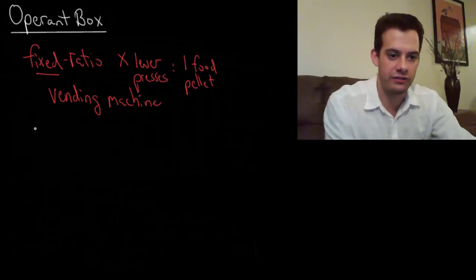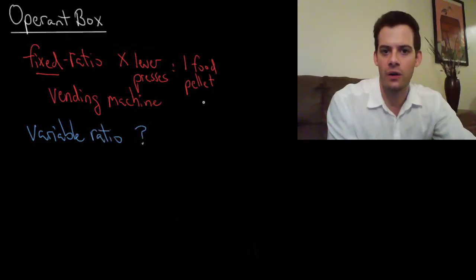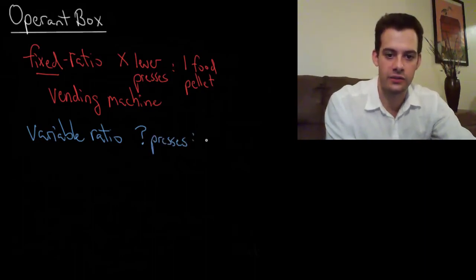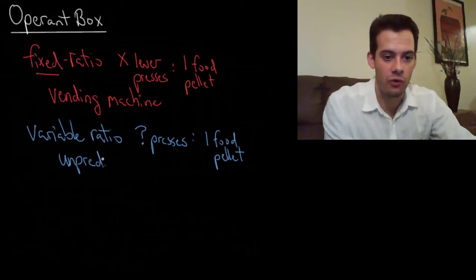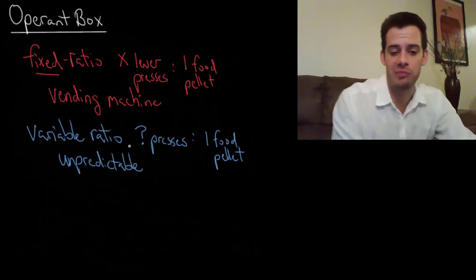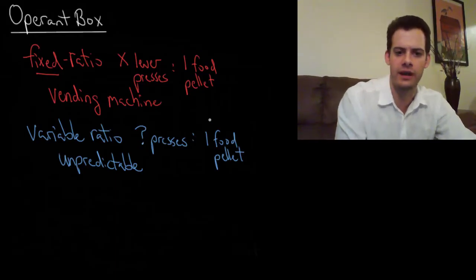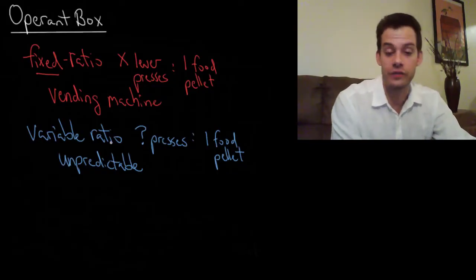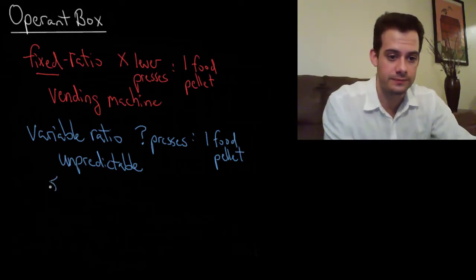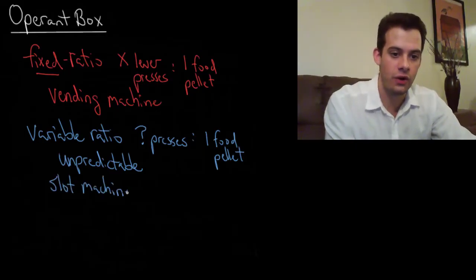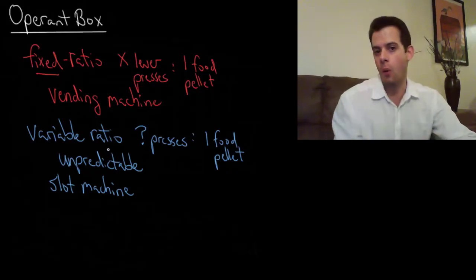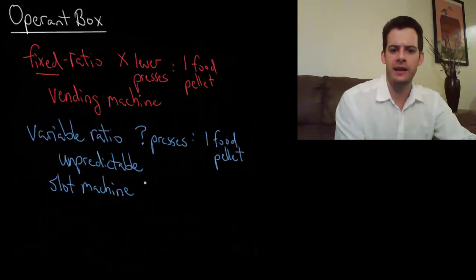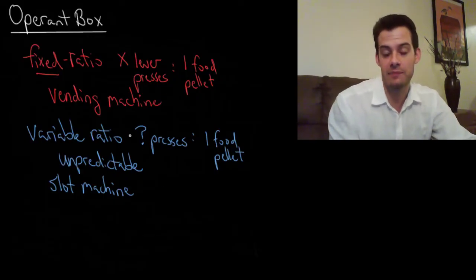In contrast, in a variable ratio schedule, you don't know how many presses will lead to the food pellet — it's unpredictable and always changing. Sometimes you press three times and get a food pellet, then ten times, then once. A human example is a slot machine — you don't know how many times you have to pull the lever to get the reward. This changes the rate of behavior compared to a vending machine.